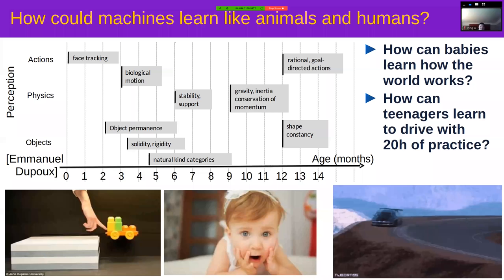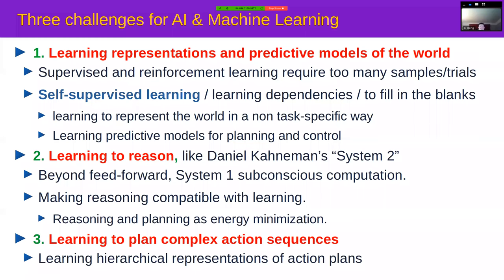This is one of the main challenges of AI and machine learning today. There are two big questions: how do we get machines to learn representations of the world and predictive models of the world — which I'll address with self-supervised learning — and how do we get machines to reason in a way that's compatible with gradient-based learning? The third question is how to learn to plan complex action sequences, which I don't have a complete answer to yet.